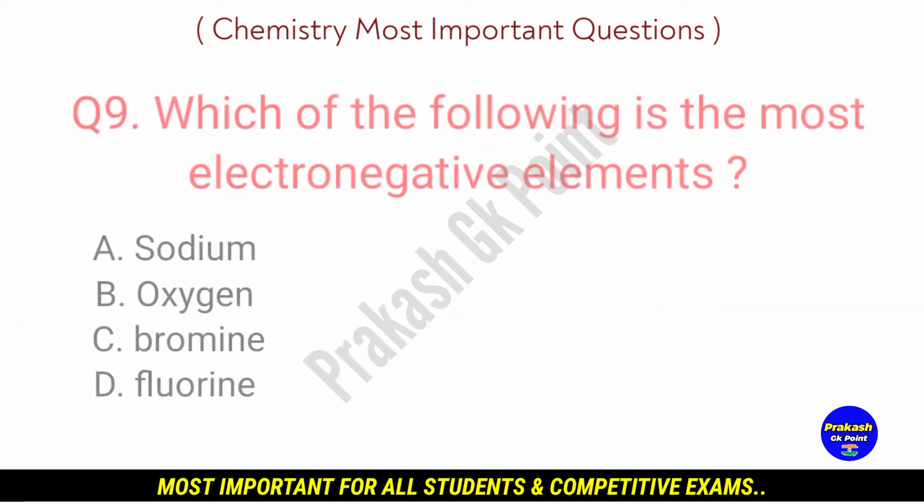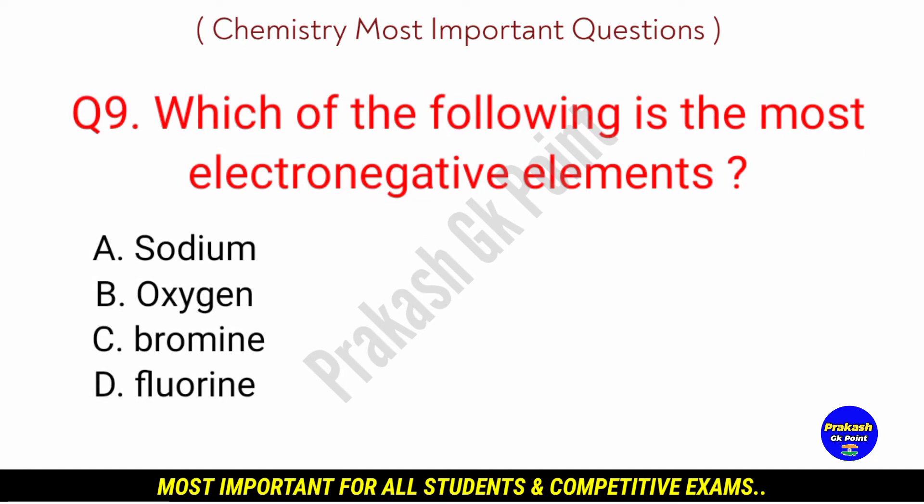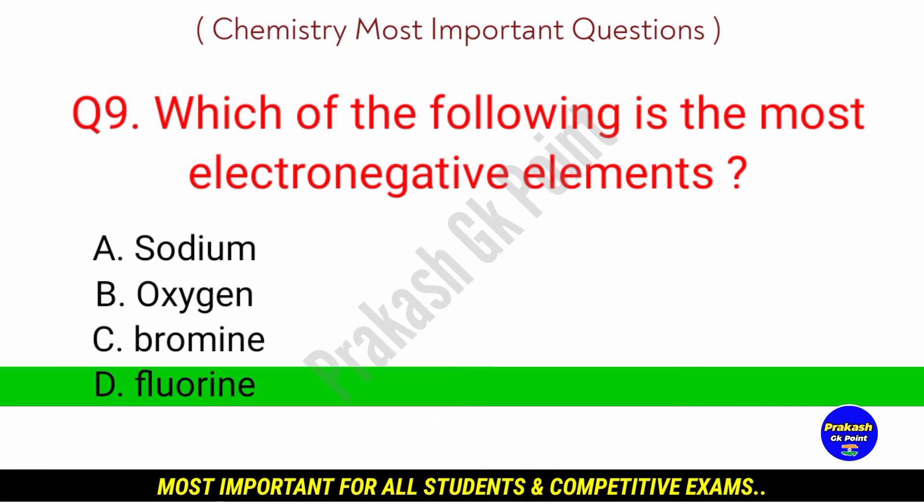Which of the following is the most electronegative element? Answer: option D, Fluorine.